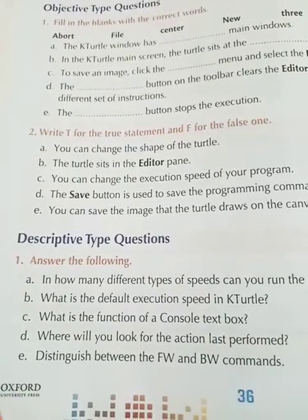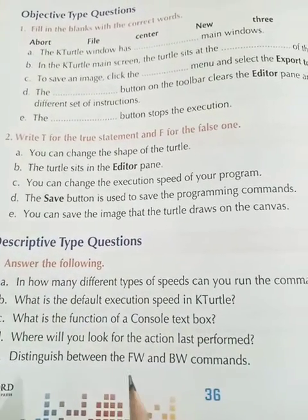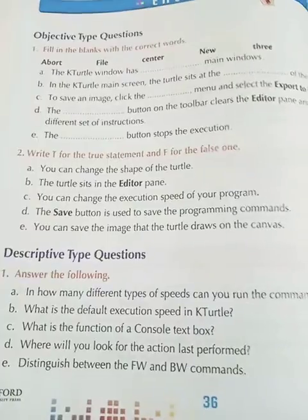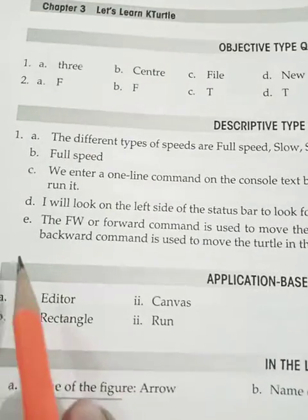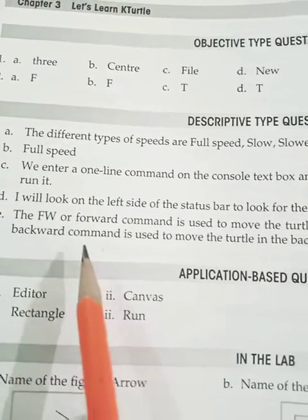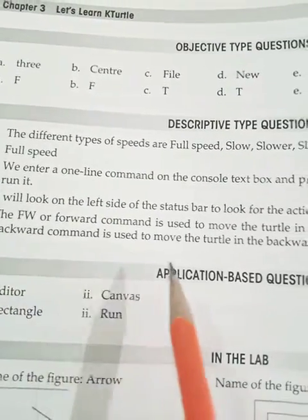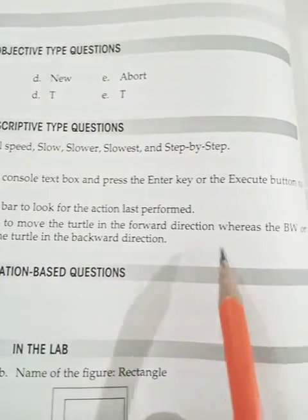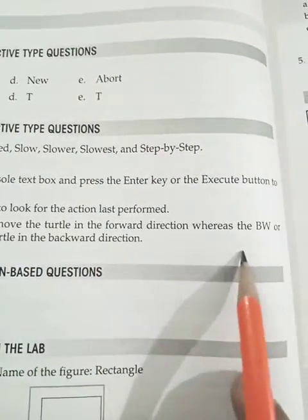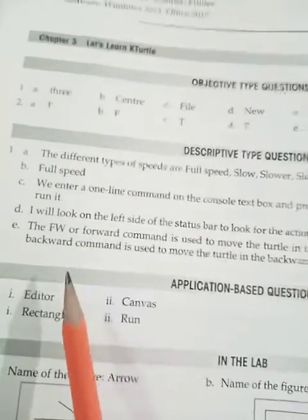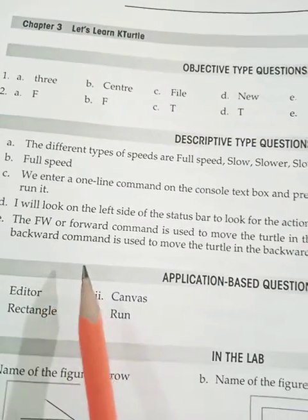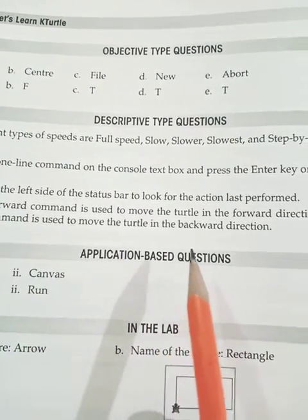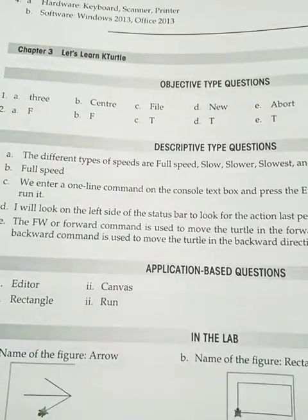Question E: Distinguish between the forward and backward commands. Answer: The 'fw' or forward command is used to move the turtle in the forward direction, whereas the 'bw' or backward command is used to move the turtle in the backward direction.